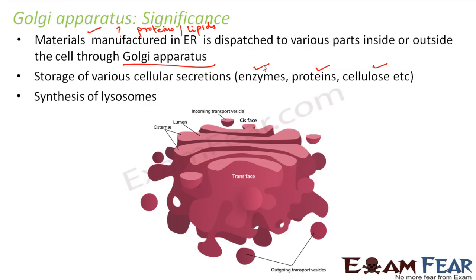The Golgi apparatus also helps in the synthesis of lysosomes, which are another cell organelle with their own specific function. So to recap, the Golgi apparatus is a network of vesicles that helps store many things and dispatches materials from the endoplasmic reticulum to other parts inside and outside the cell.